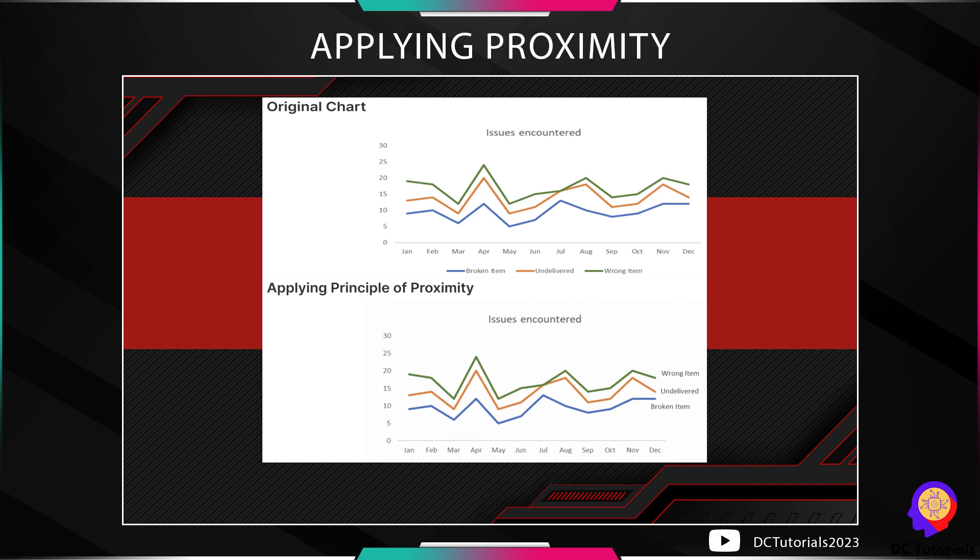Applying the principle of proximity to our chart, we can move the labels closer to the chart itself so that it will be easy to identify which label is for which line. It will save time to consume the chart if the labels are closer to the actual lines or bars.